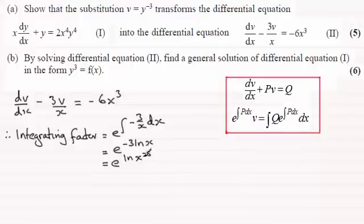And whenever we've got a situation like this, e to a natural log of some value, let's say a, should know that the result is just a. So in this example, it's just going to be x to the power minus 3. So our integrating factor is a nice value, x to the power minus 3.